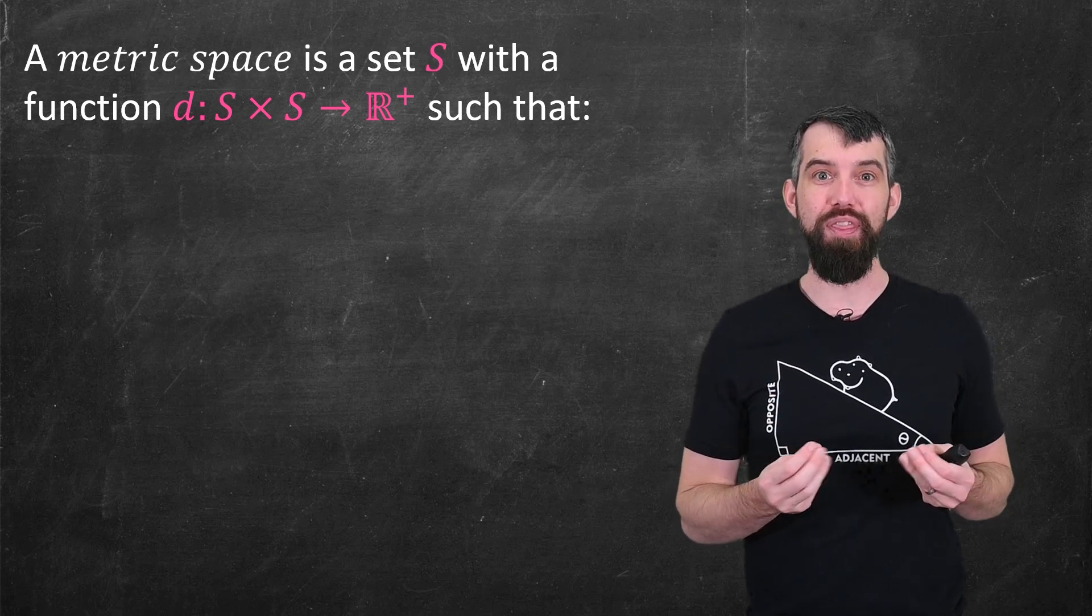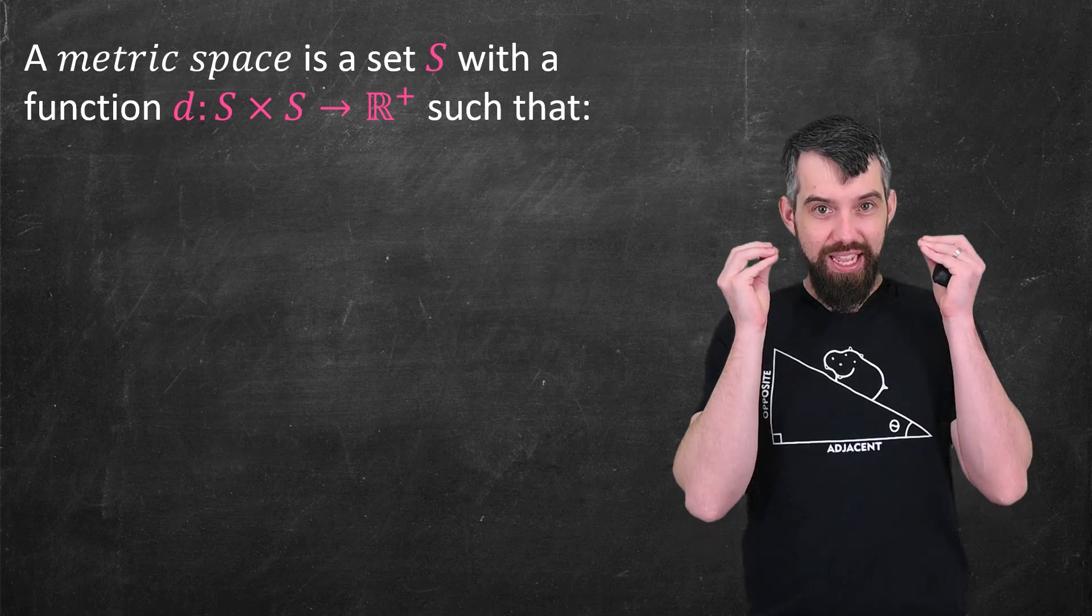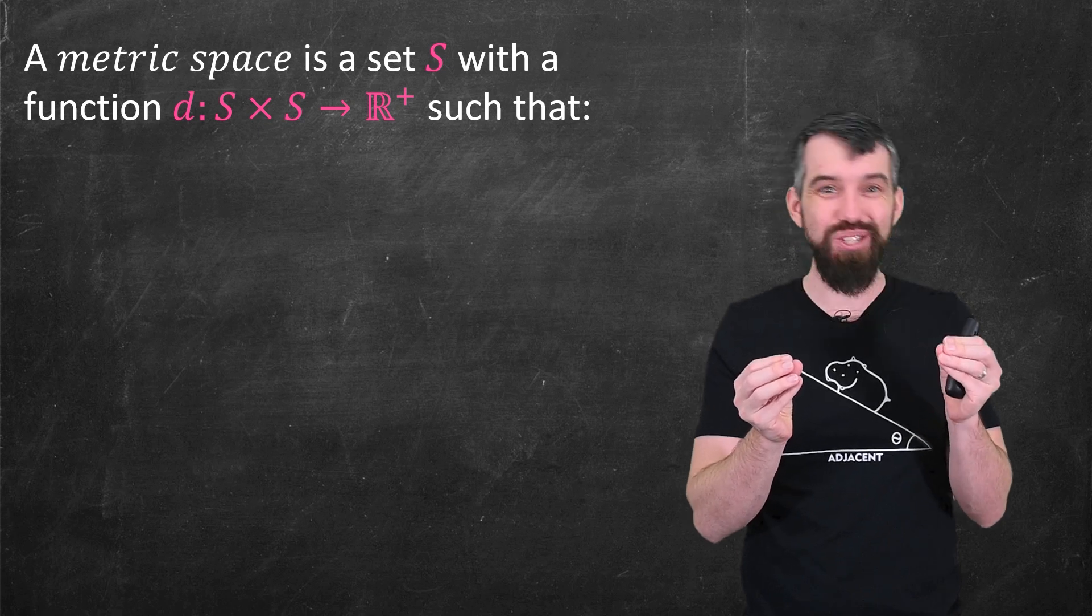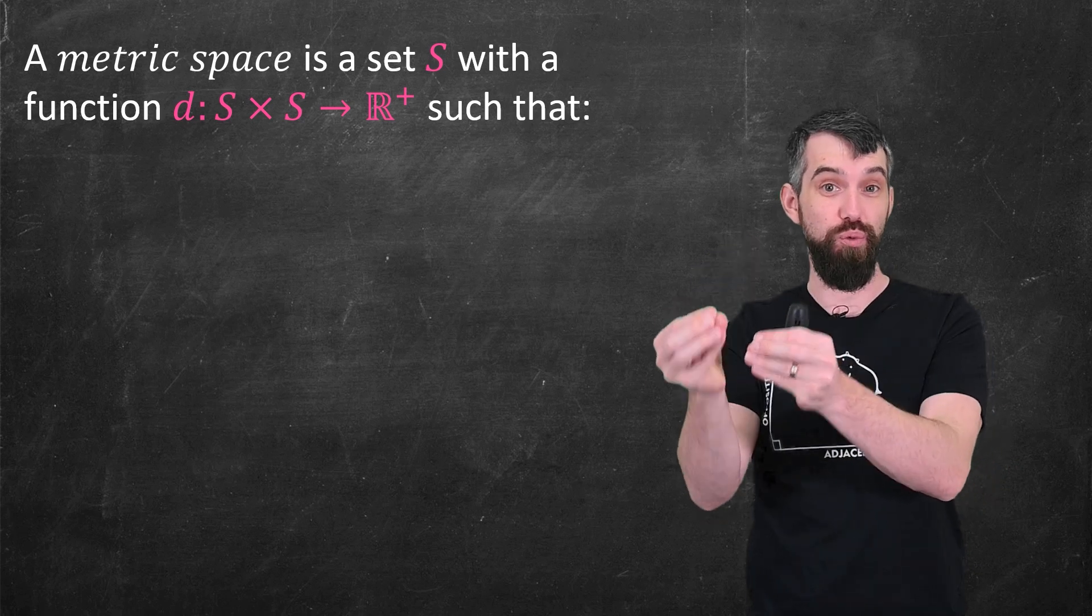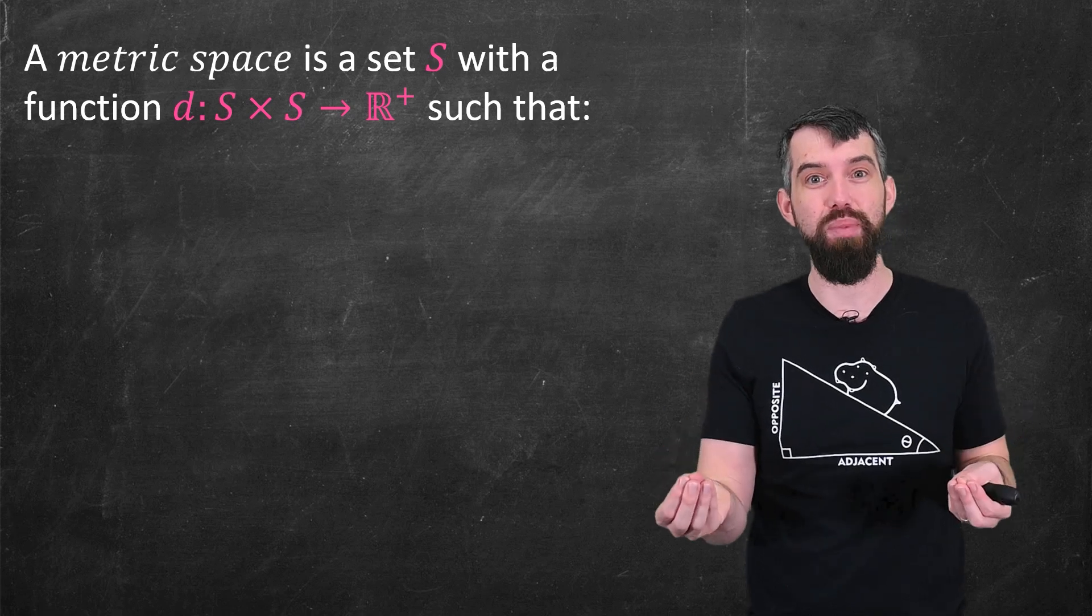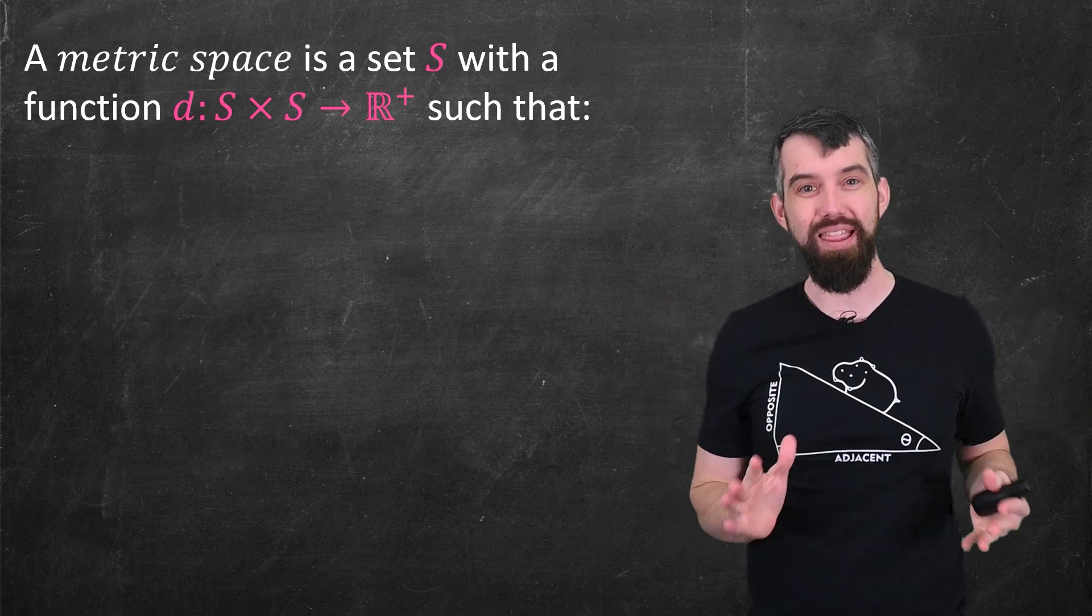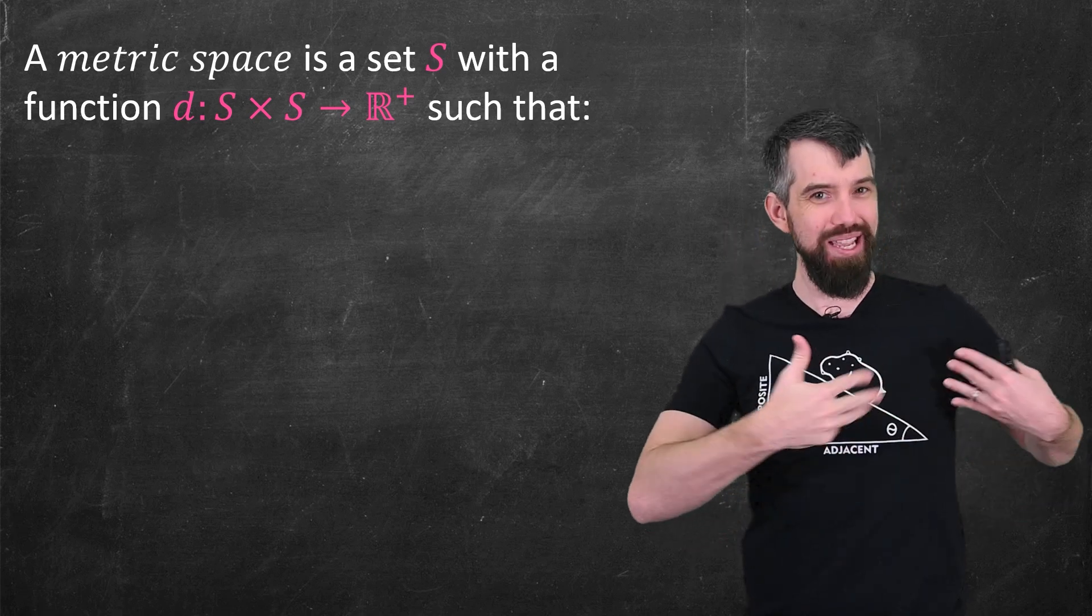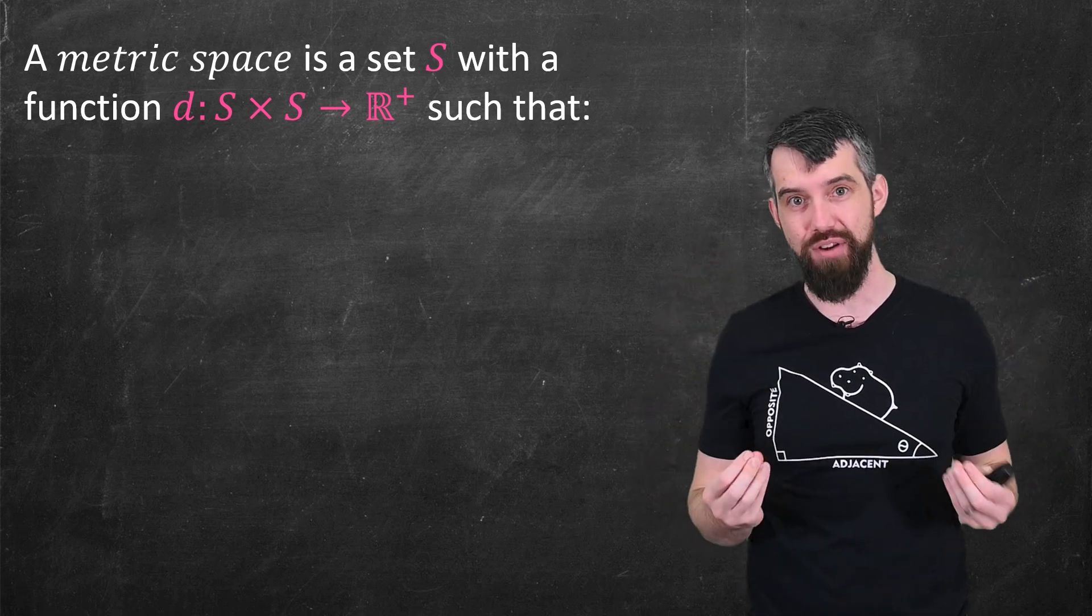Then what I'm going to come up with is a distance function d and the distance function works like this. It takes two things from the set, an A and a B, so it starts in what we call S cross S to use our fancy notation, and it spits out a positive real number. So for example, the distance between two points is going to be just some positive number, like say three. Okay, but the distance formula can't just be anything, it can't be any function. It has to obey three common properties to be termed an appropriate notion of distance, or our fancy word here is metric.